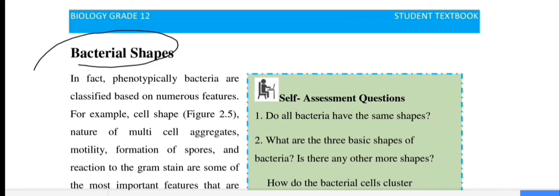For example, cell shape, nature of multi-cell aggregates, motility, formation of spores, and the reaction to the gram stain are some of the most important features.